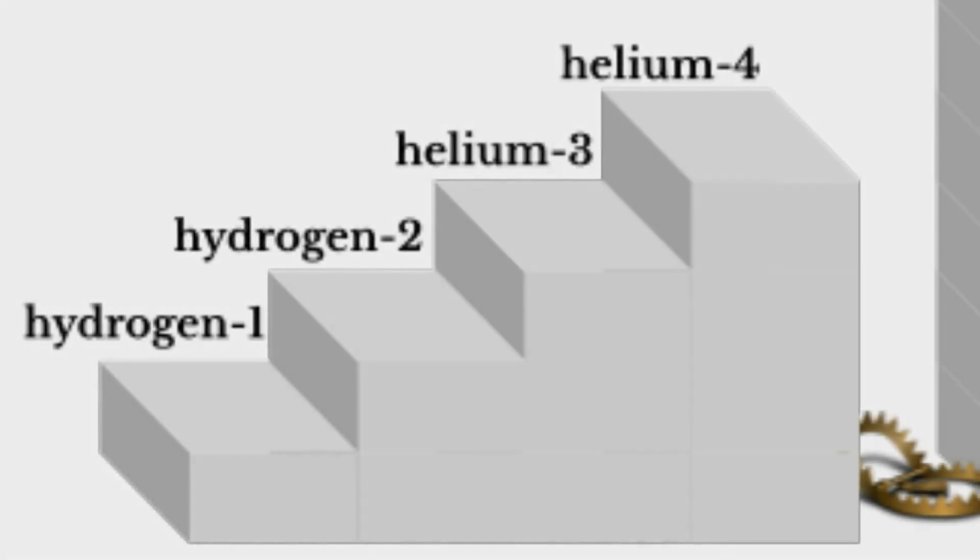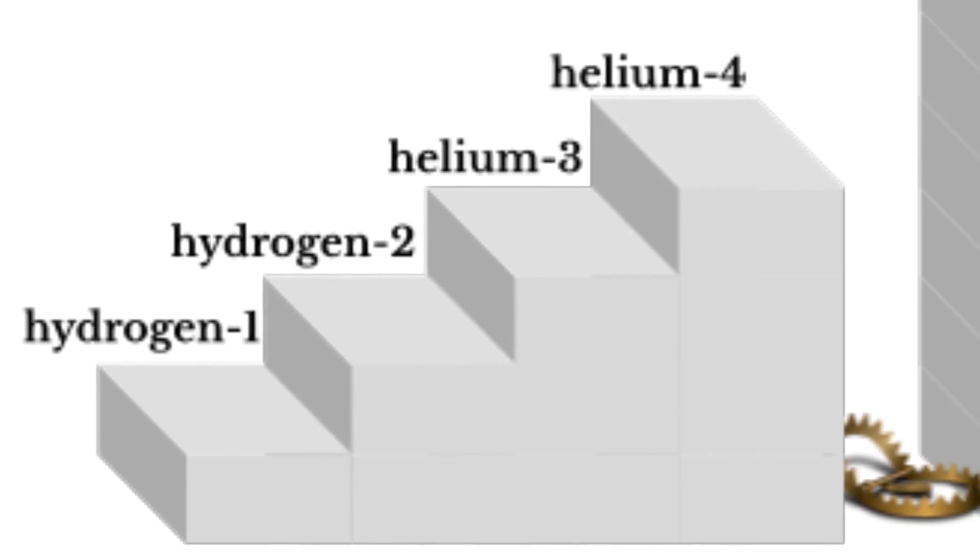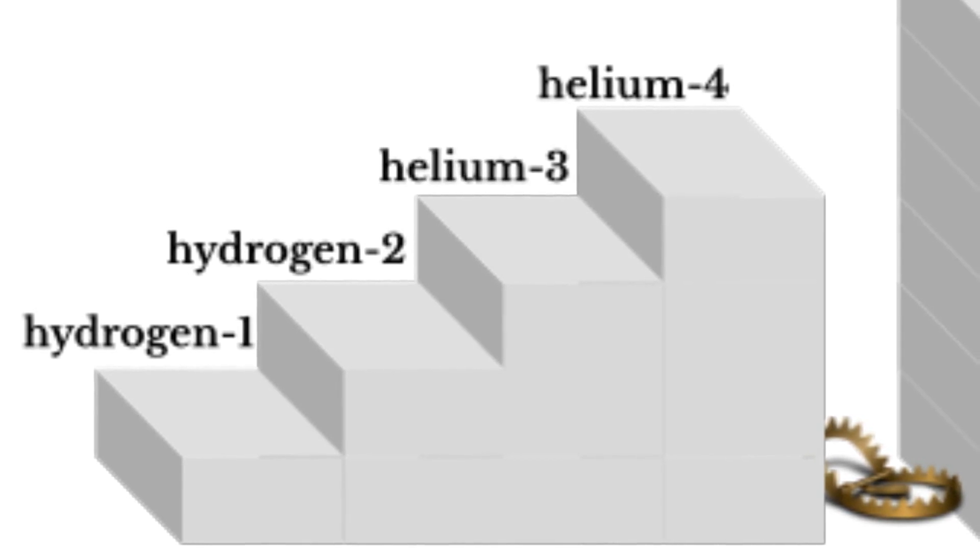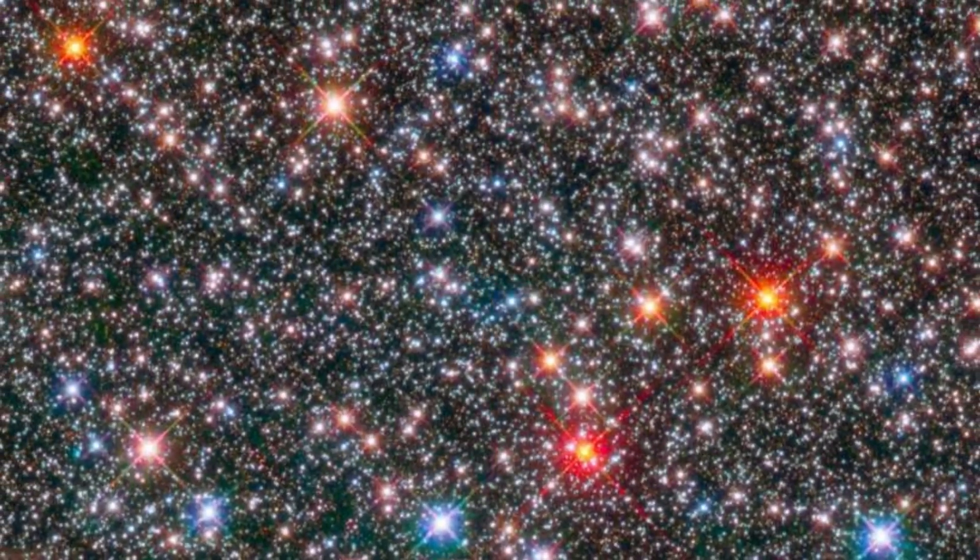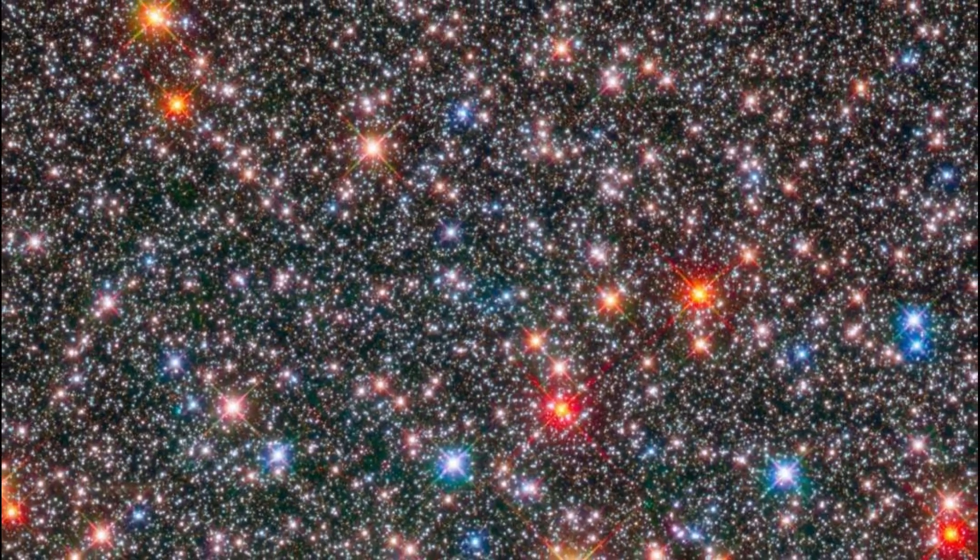With equal numbers, each proton could pair with a neutron to form hydrogen-2. Hydrogen-2 rapidly reacts to form helium. There would be no more hydrogen of any kind in the universe, no fuel to power stars like our sun, no water, no organic chemistry, no life.